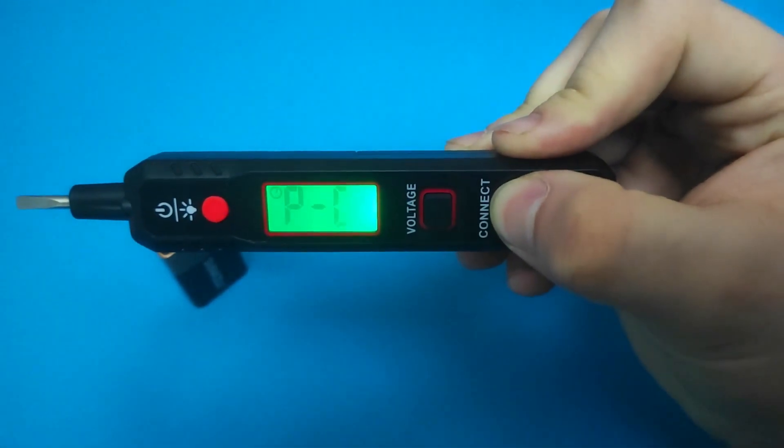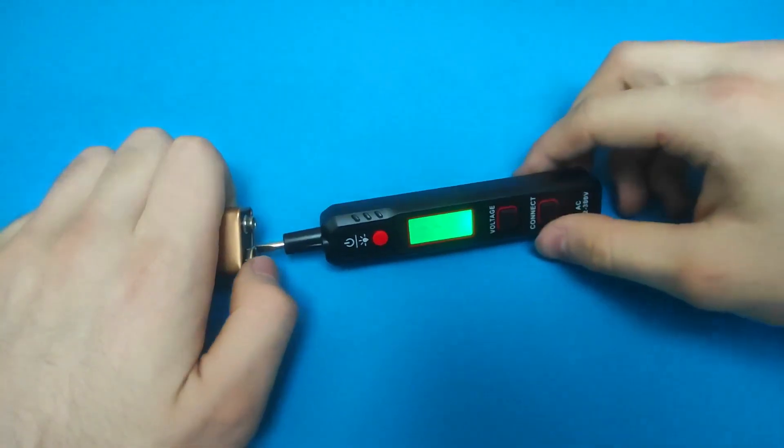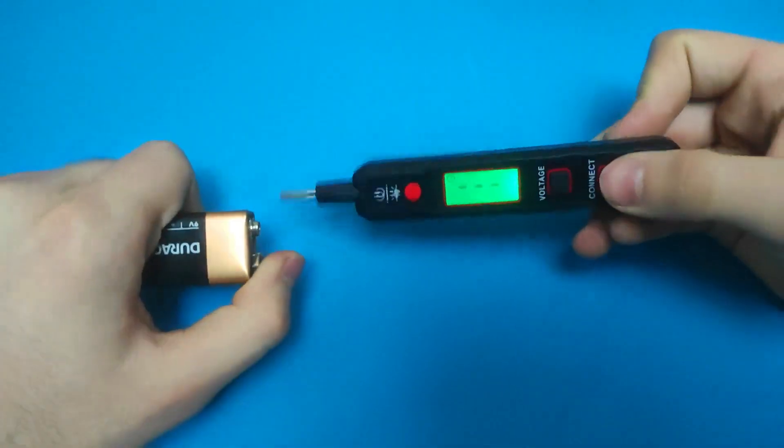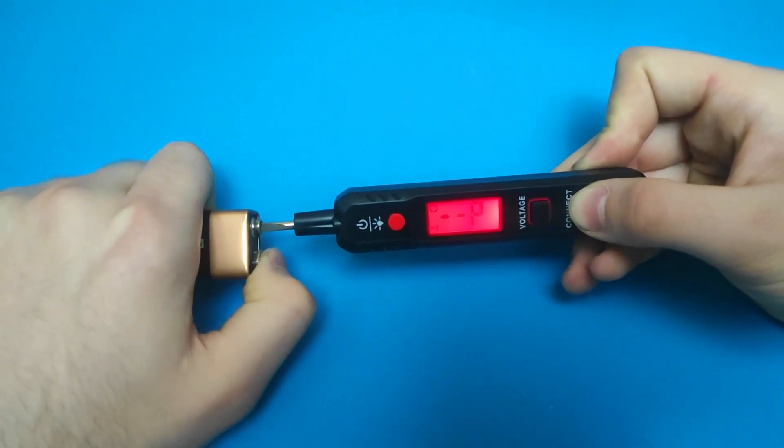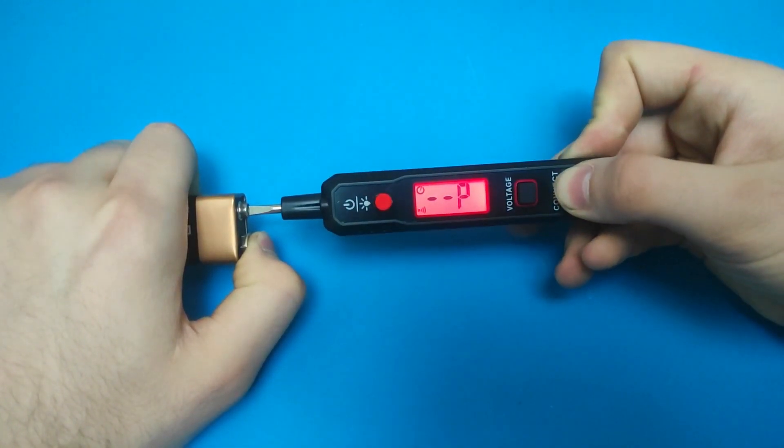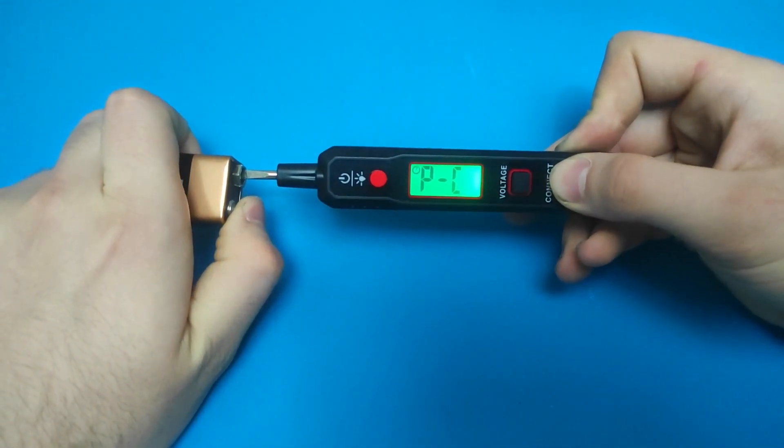The third function of this great tester is to check batteries and polarity. Press the negative end of the battery and touch the positive end with the voltage tester. If the battery is good, you will hear a sound indicating that there is polarity.